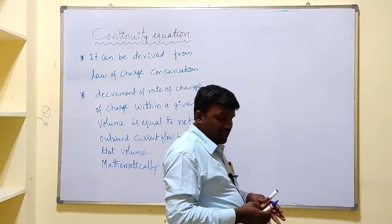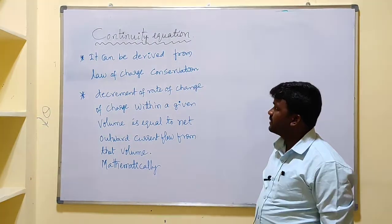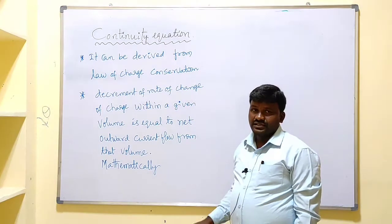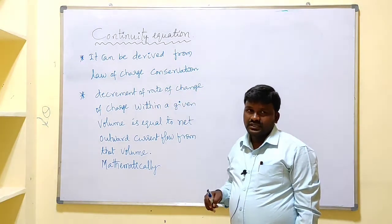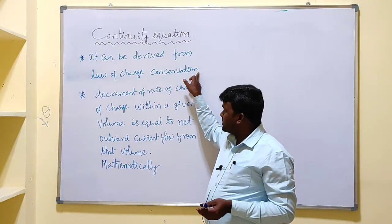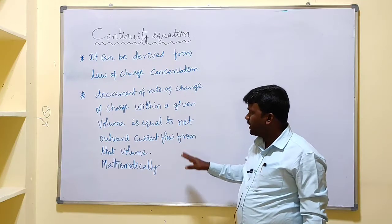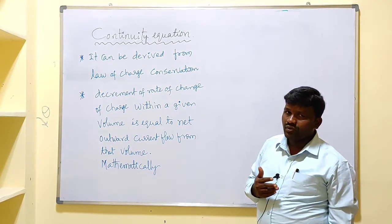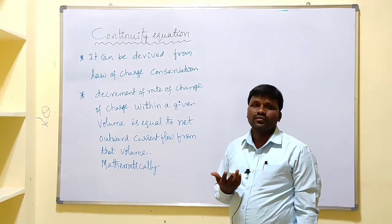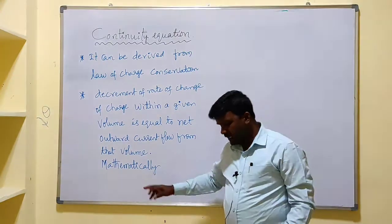Welcome to our electromagnetic theory course. In this lecture we will discuss the continuity equation. This continuity equation is derived from the law of charge conservation. The law of charge conservation means charge can neither be created nor destroyed. It states that the decrement of rate of change of charge within a given volume is equal to the net outward current flow from that volume.